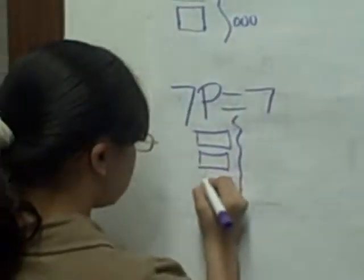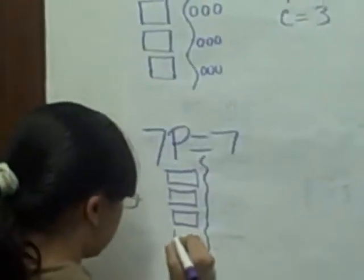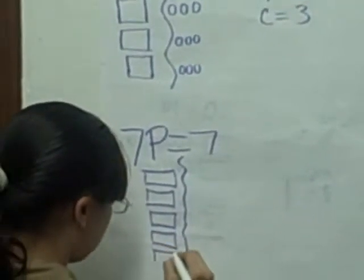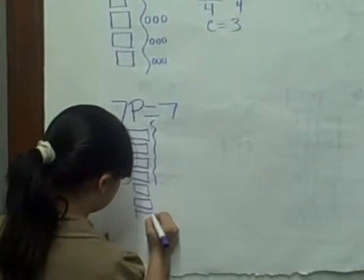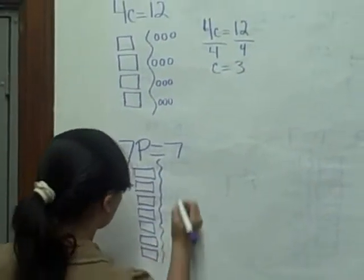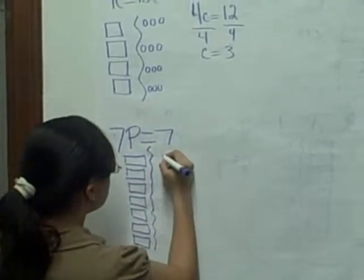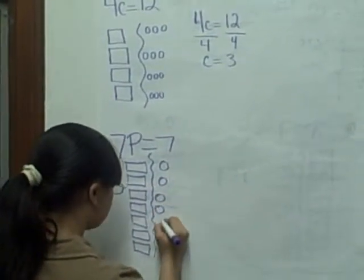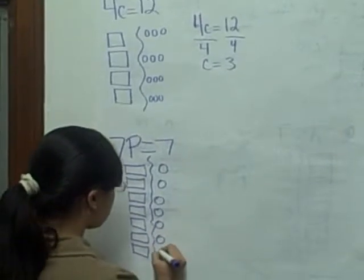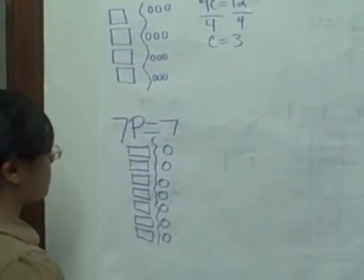7P is saying 7 plastic cups and she is drawing 7 plastic cups. Now she has 7 chips, she has to divide each chip to make each chip go into 1 cup because it is 7 cups and it is 7 chips so you have to make it equal.